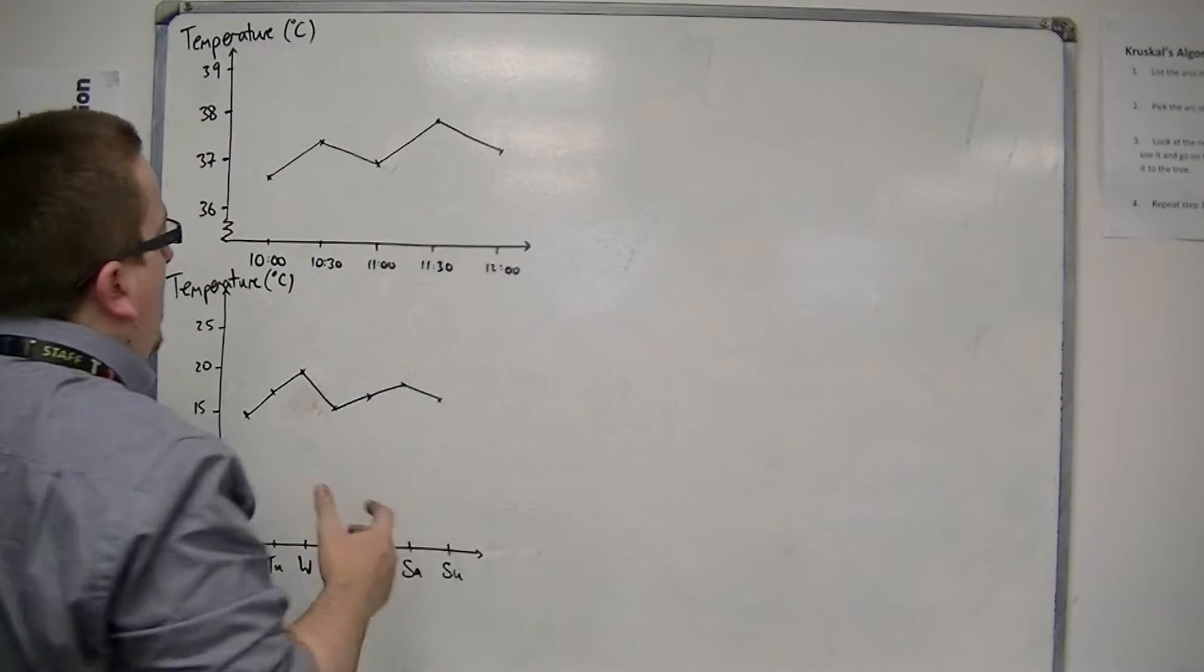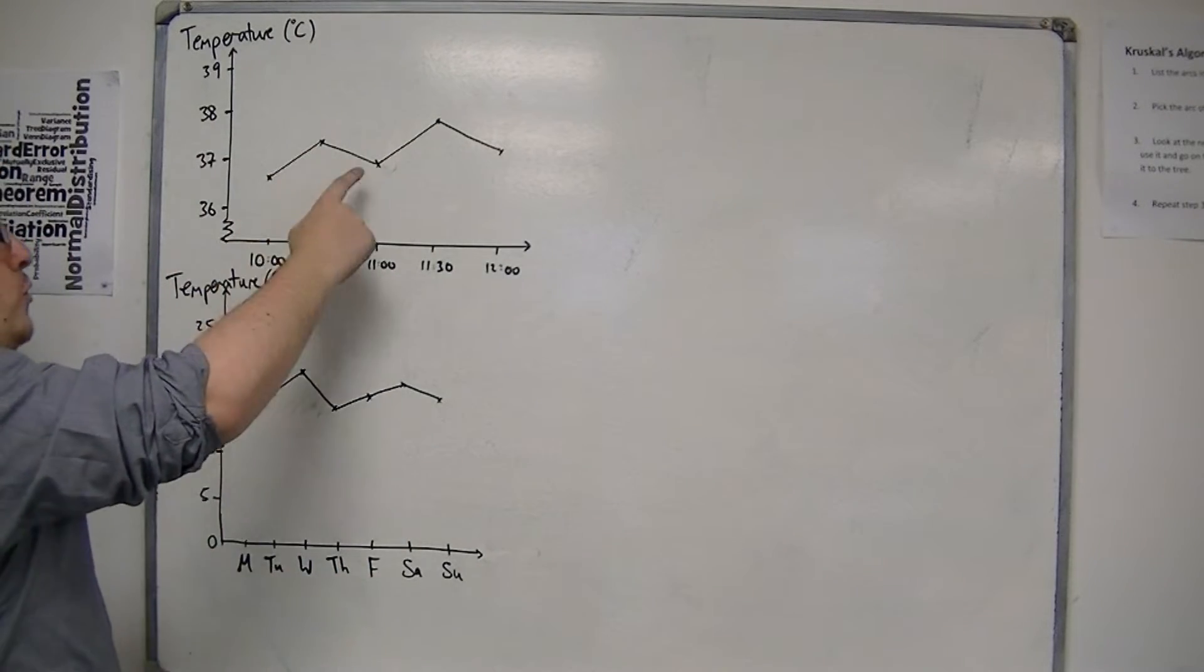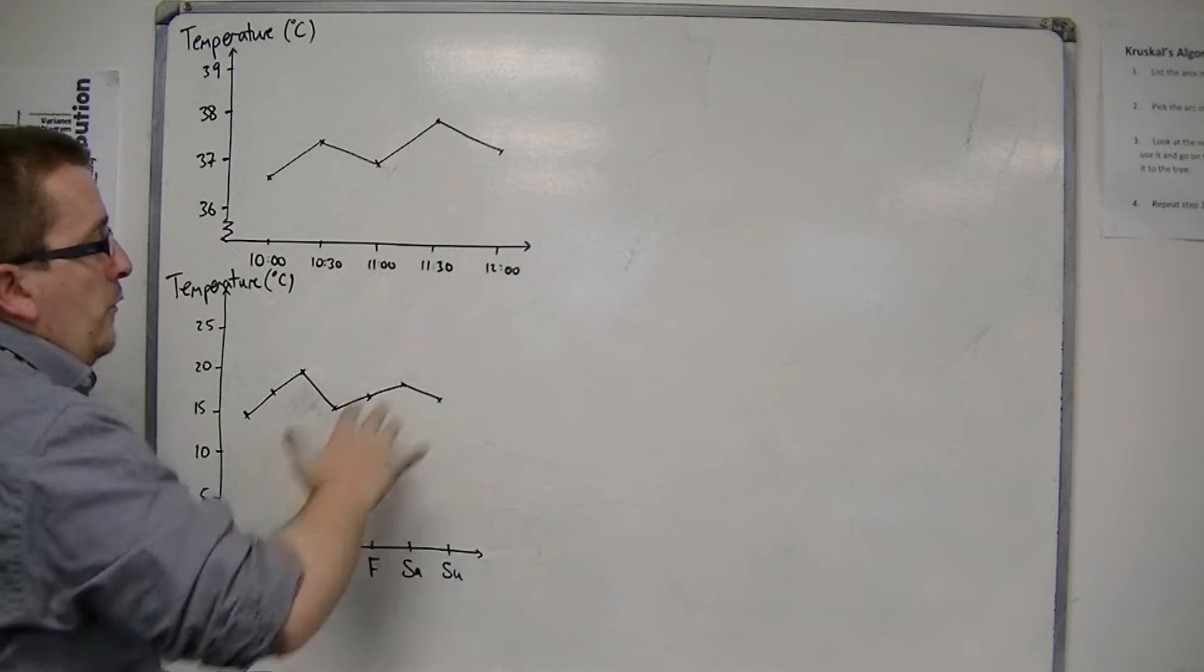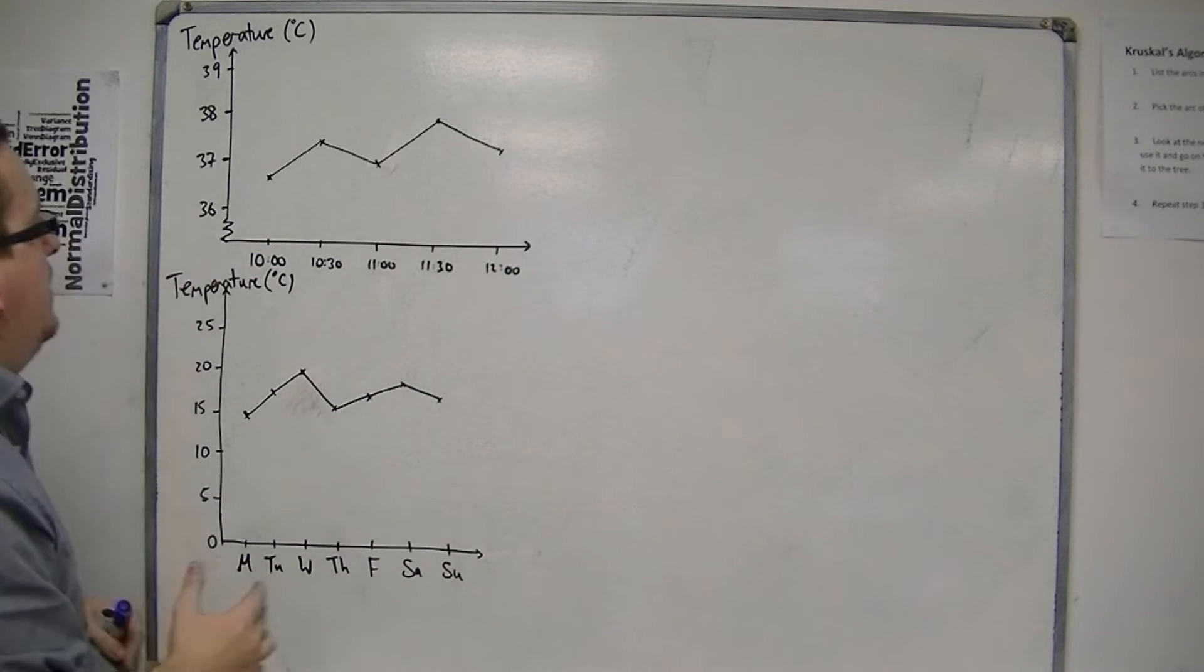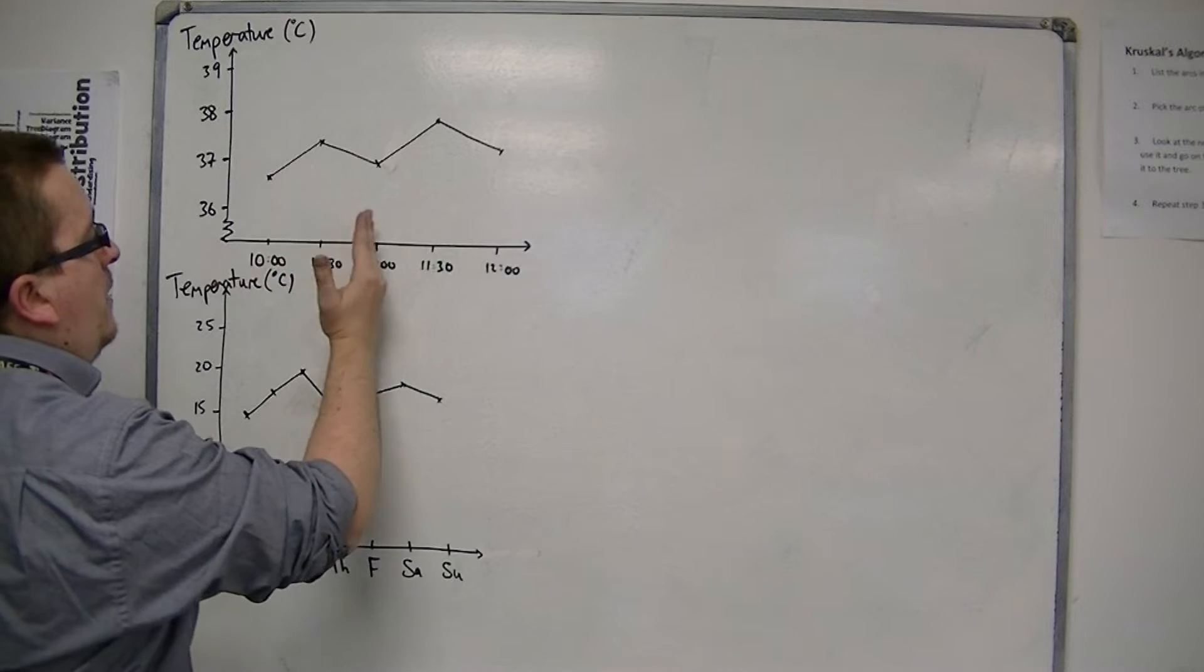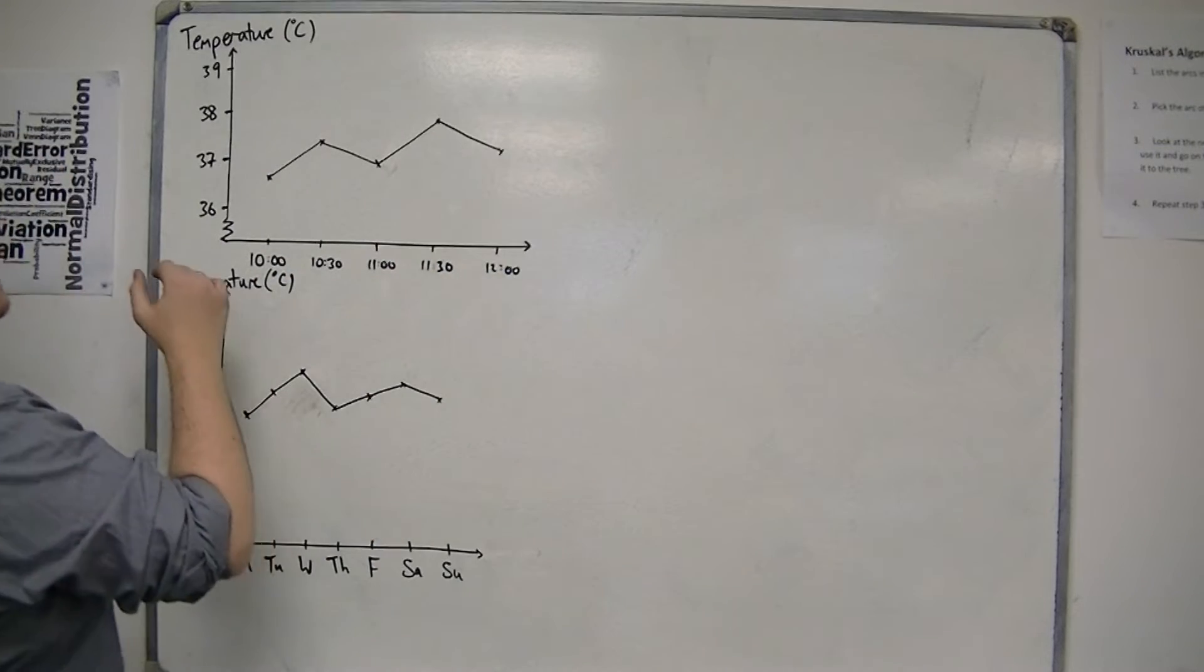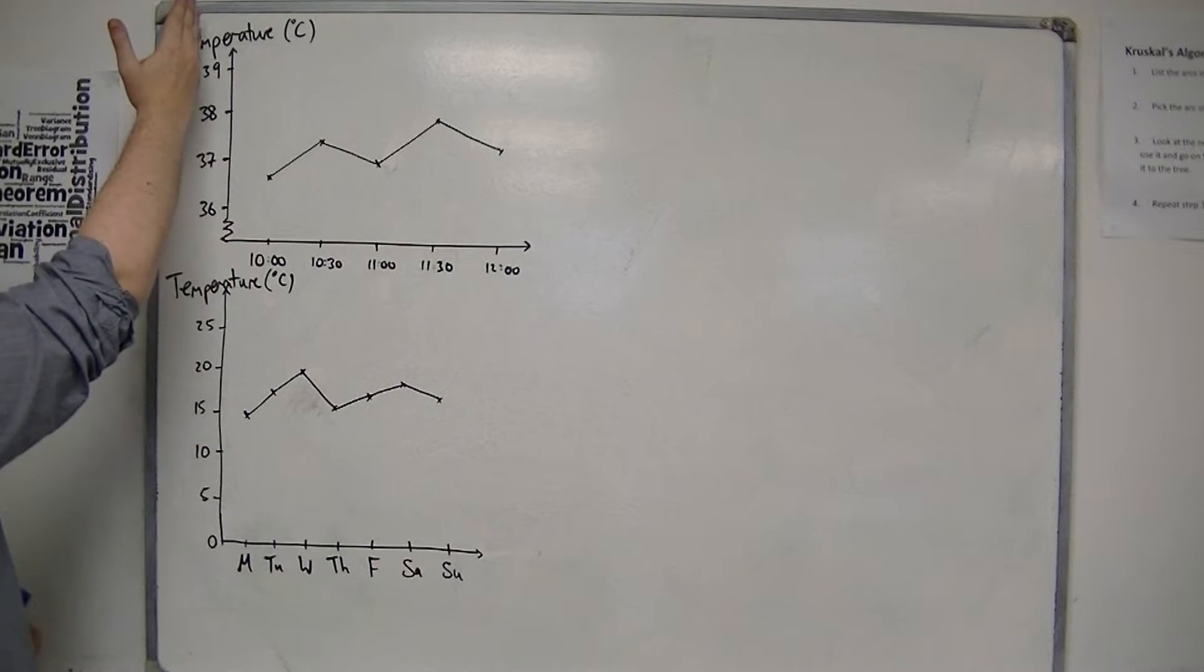Notice how the points have been joined up. The time is down the bottom, it's the bottom axis, going along every half an hour. The temperature is up the left-hand side.